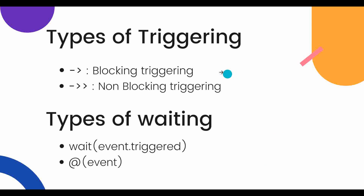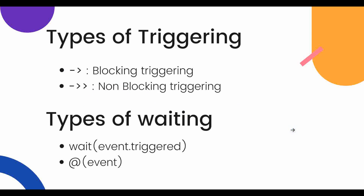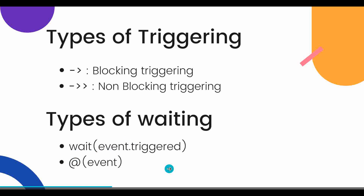There are two types of triggering: blocking triggering and non-blocking triggering. We will see these in the code demo later. There are also two types of wait statements: one is `wait event.triggered` and the other is `@event`. We will now see how these two wait statements work.